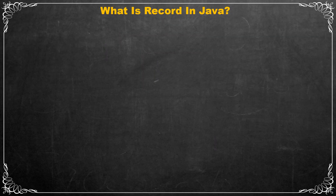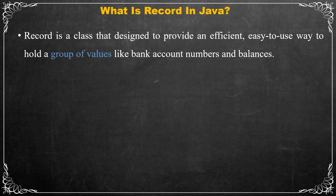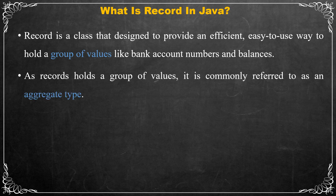A record is designed to provide an efficient, easy-to-use way to hold a group of values. For example, you might use a record to hold a set of coordinates, bank account numbers, and balances. Because it holds a group of values, a record is commonly referred to as an aggregate type.